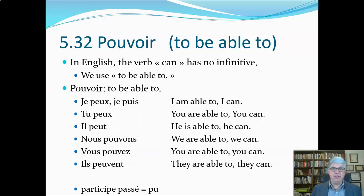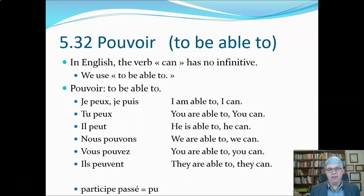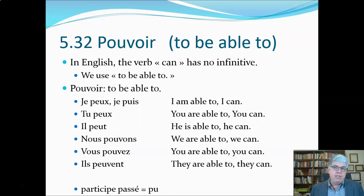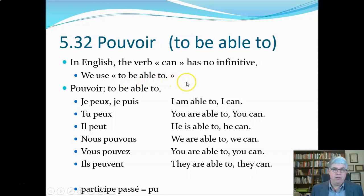This is an interesting verb because it's used a lot and it's kind of unique in English. In English, the verb 'can' has no infinitive — like 'I can do French,' 'I can pass this course.' There's no infinitive for it. It's known as a defective verb because a form of it doesn't exist. So when we have to use the infinitive of 'can,' we have to say 'to be able to,' because 'to be able to' and 'can' are pretty much true synonyms in English.